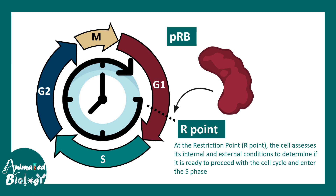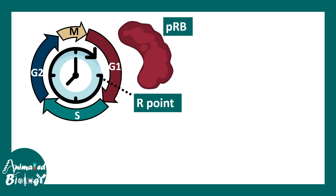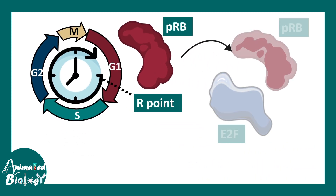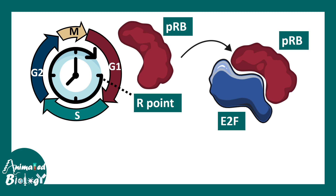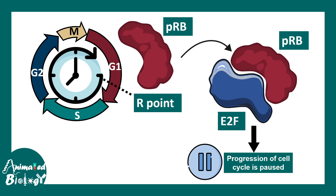PRB takes the critical decision whether to go forward or to halt the cell cycle. It does this by regulating an important transcription factor known as E2F, or elongation factor 2F. E2F is really important for S phase progression. Once PRB encapsulates E2F, cell cycle progression is paused.